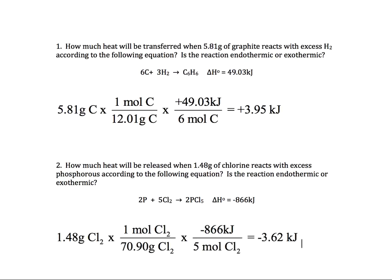There it is. We take the 1.48, we divide it by the molar mass of chlorine, which is 70.9. We're then going to multiply that out by the 866 divided by 5. We get a negative 3.62 kilojoules. That is exothermic.